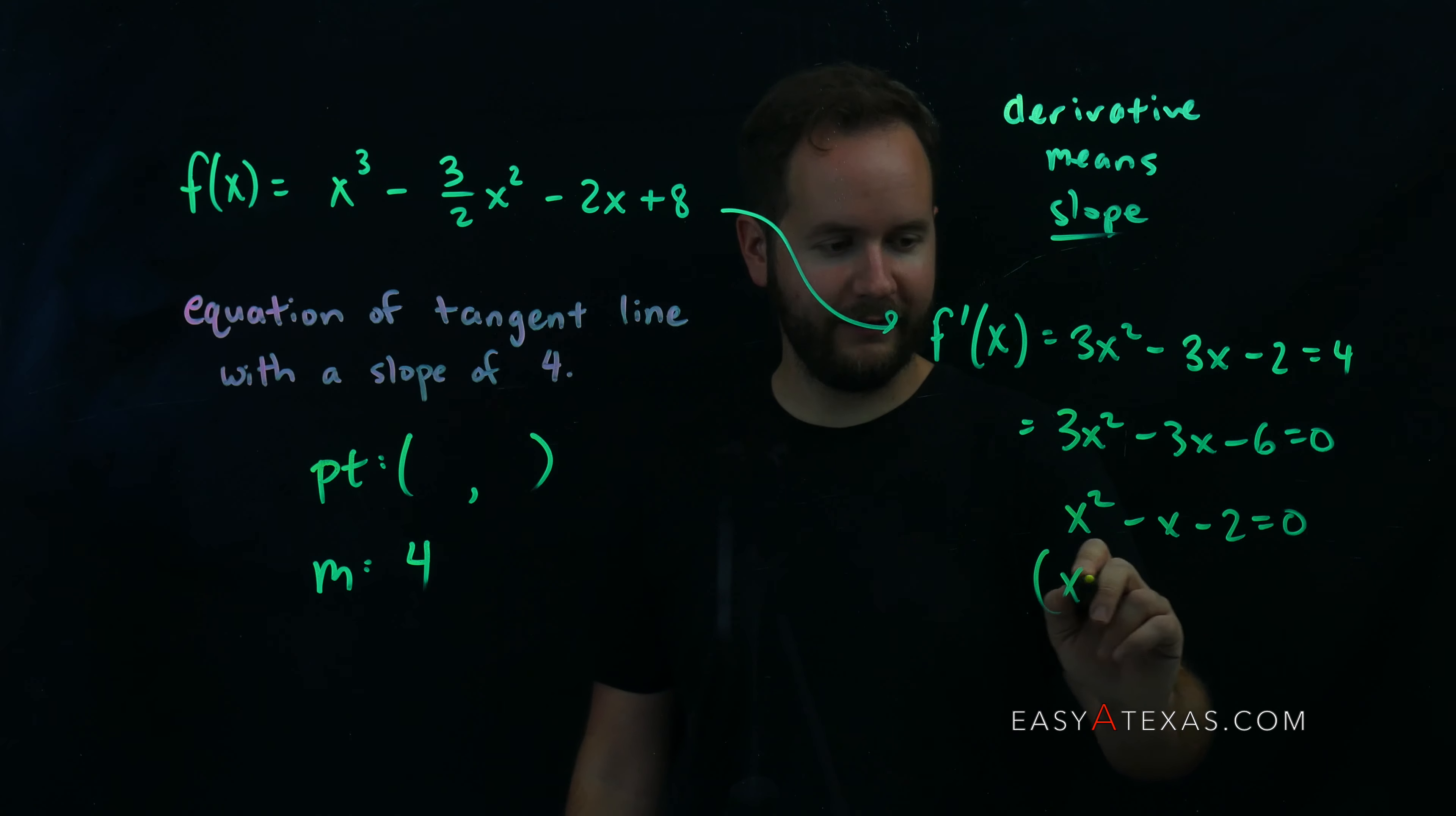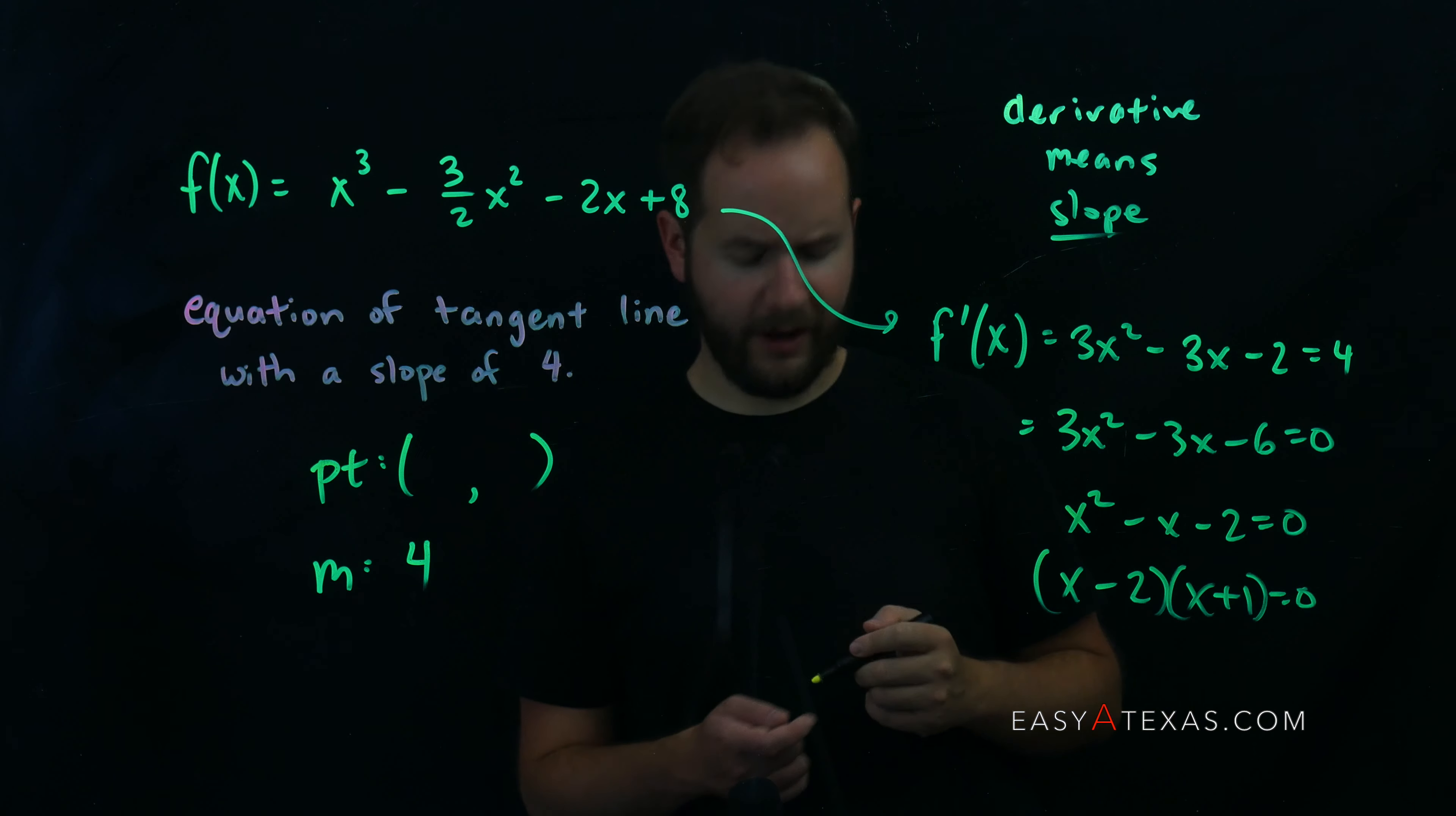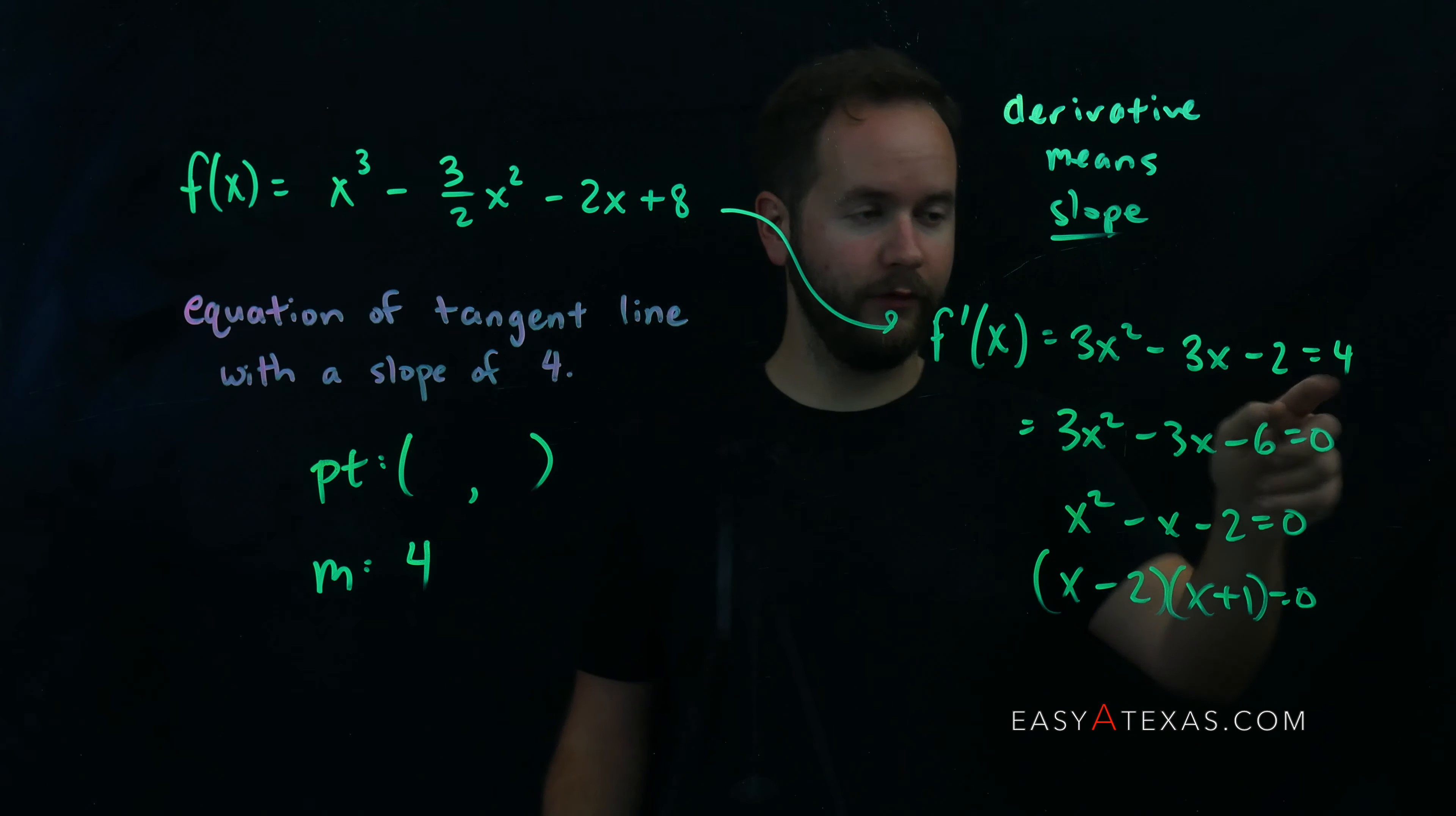Now, how does this factor? Factors into x minus 2 times x plus 1. There are two values of x for which the derivative is equal to 4, namely x equals 2 and x equals negative 1.